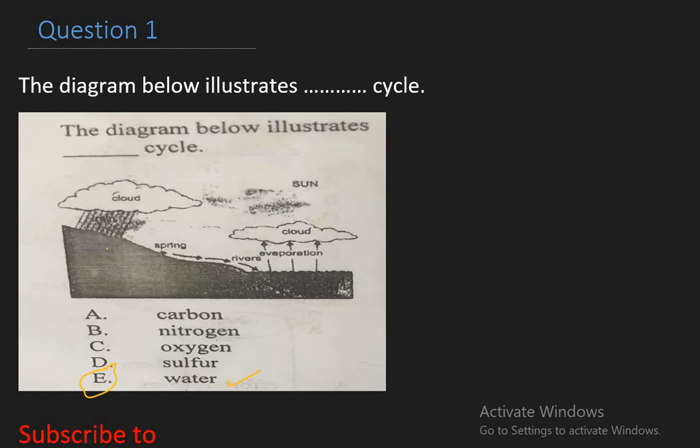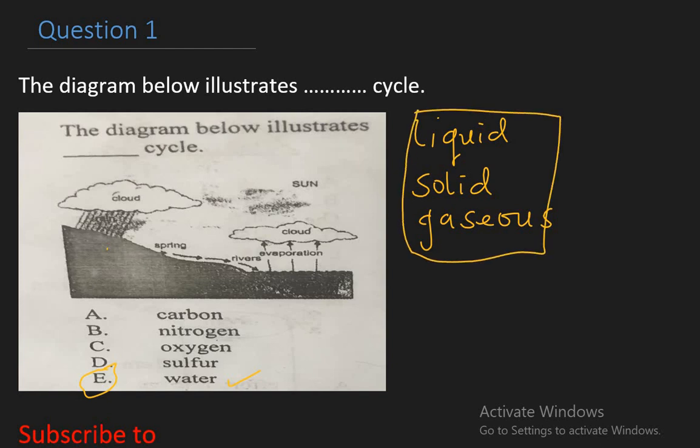When we talk about the water circle, the water circle is a natural recycling process of water in the environment. Water in the environment is being recycled and this water has mainly three states which are liquid, solid, and the gaseous. So the water circle changes into those three states between the earth and its environment and this happens in stages.